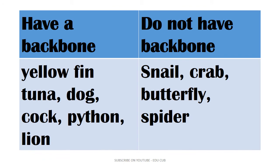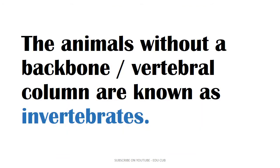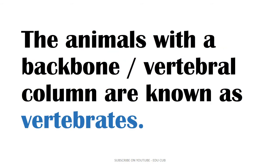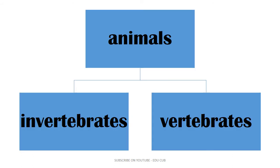You can tabulate this using your Grade 7 knowledge. The animals without a backbone or vertebral column are known as invertebrates. The animals with a backbone or vertebral column are known as vertebrates. Therefore, animals can be classified into two groups: invertebrates and vertebrates.